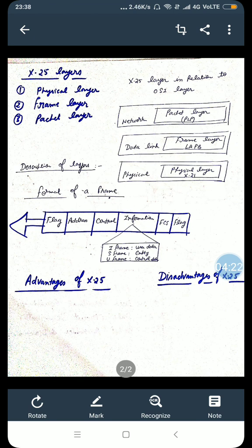Next we have the frame layer. X.25 uses a bit oriented protocol at frame layer. This protocol is called as link access procedure balanced, LAPB. LAPB is subset of high level data control HDLC which is bit oriented protocol used in point to point and multipoint links.